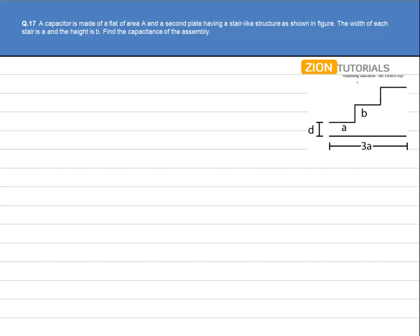A capacitor is made of a flat plate of area A and a second plate having a stair-like structure as shown in the figure. The width of each stair is A and the height is B. Find the capacitance of the assembly.